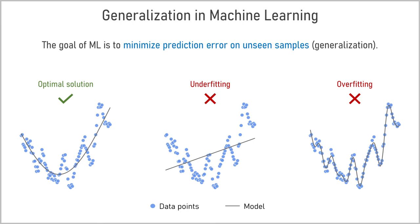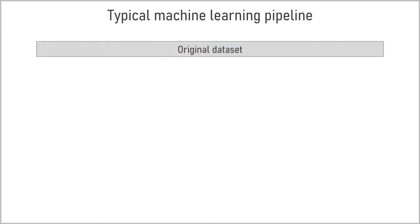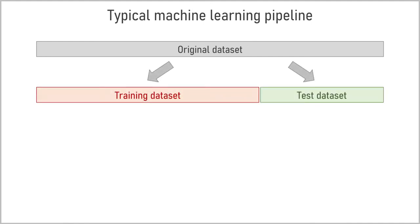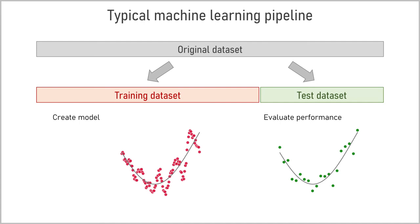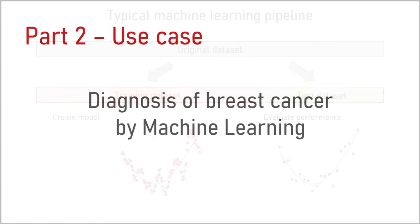In order to find the best solution, in a typical machine learning pipeline the original data are randomly separated into a training and a test dataset. First, the training dataset is used to create the model. Then, the test dataset is used to evaluate the performance of this model on new unseen data that never participated in the learning process. An optimal model will produce good predictions not only in the training dataset, but also in the test dataset.